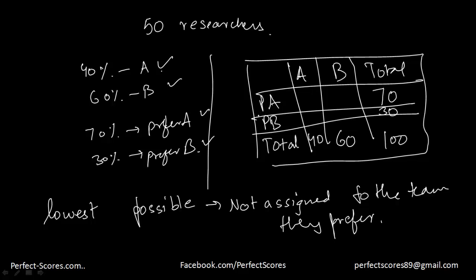So that means people who prefer A, these are the people who are not assigned to A and people who prefer B, these are the people who are not assigned to B. That means I need to find the lowest possible number that I can actually fit over here.